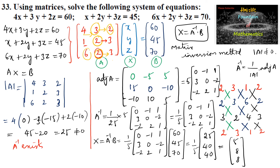The variable matrix xyz gives x equals 5, y equals 8, and z equals 8 as the solution by the matrix method. Let us verify by substituting into the second equation: 5 plus 2×8 equals 5 plus 16 equals 21, plus 3×8 equals 24, so 21 plus 24 equals 45. This satisfies the equation, confirming the solution is correct.